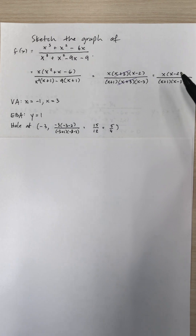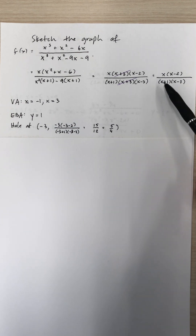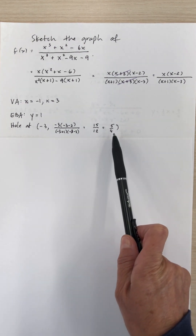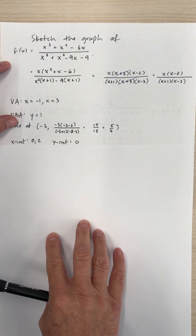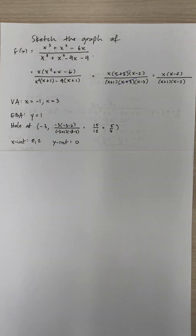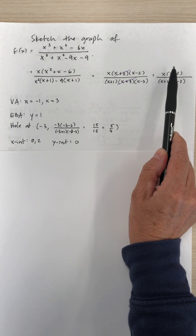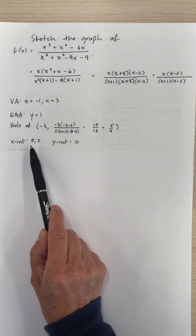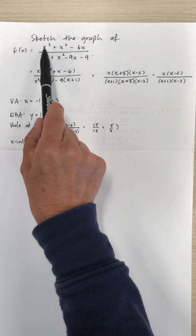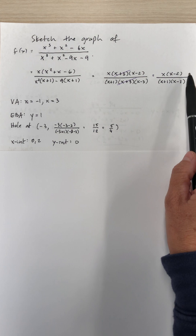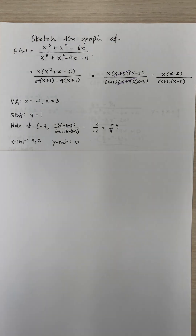To find the y-coordinate of the hole, we plug negative 3 into the simplified equation: negative 3 times (negative 3 minus 2) over (negative 3 plus 1)(negative 3 minus 3), which equals 5/4. So we have a hole at (negative 3, 5/4). The x-intercepts come from setting the numerator equal to zero: x(x minus 2) equals 0, giving x equals 0 or x equals 2. The y-intercept is found by substituting x equals 0, which gives 0. Since the x-intercept is 0, the y-intercept is 0 as well.